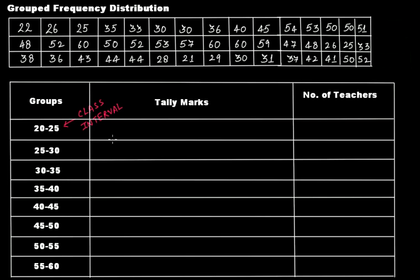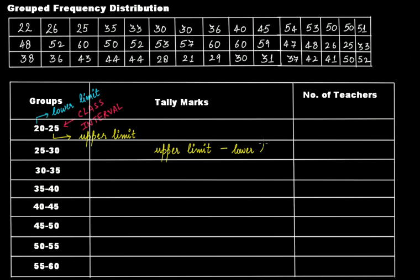In each class interval you will have the upper limit and the lower limit. The difference between the upper limit and the lower limit is the width or the size of the class interval. For example, 25 minus 20 gives 5.